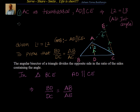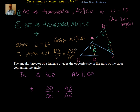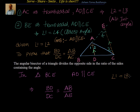Second step: if we take BE as a transversal, with AD parallel to CE, then angle 1 is equal to angle 4. Why? Because they are corresponding angles. So we have angle 1 equal to angle 4, and angle 2 equal to angle 3. We already know from what was given that angle 1 is equal to angle 2.